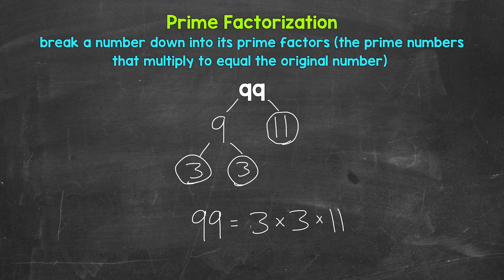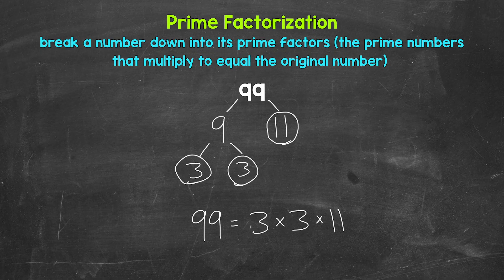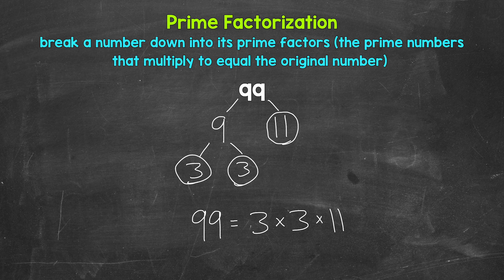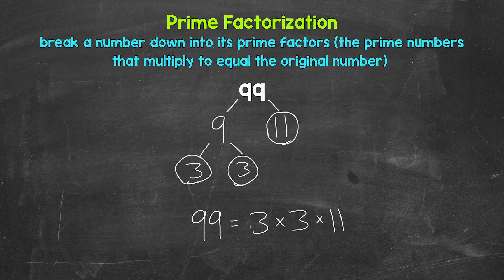Now, if we have the correct prime numbers, they will multiply to equal our original number. So let's check. 3 times 3 is 9. Times 11 is 99. So we are correct here.